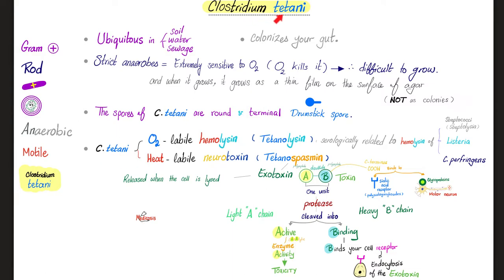There are two types of toxins released by Clostridium tetani. The first is oxygen-labile hemolysin, called tetanolysin — serologically related to hemolysins of Streptococcus, Listeria, and Clostridium perfringens. Its clinical significance is unknown because once it enters the body it gets destroyed by oxygen and serum cholesterol. The second is the heat-labile neurotoxin known as tetanospasmin, whose function and mechanism we do understand.